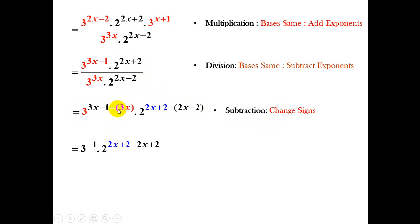So looking at 3x minus 3x, that gives us 0, and we have a minus 1 there. 2x minus 2x is 0, 2 minus minus 2 gives us a plus 2. You'll notice I've done the change of sign in this step. Simplifying that, 2x minus 2x is 0, 2 plus 2 is 4.